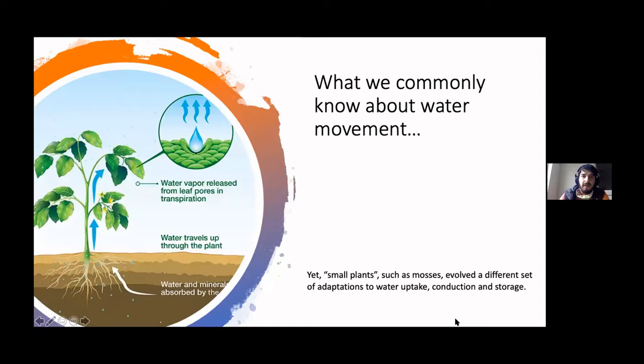Just as a way of introduction to this topic, what we usually commonly know about water movement in plants is the example that we have from vascular plants, that they have specialized structures to conduct water through the plant and release it to the environment. So basically, the water is in the soil, it moves through the roots and moves along the stem and it's released through these pores in the stomata of the leaves. That's kind of the common pattern that you usually have.